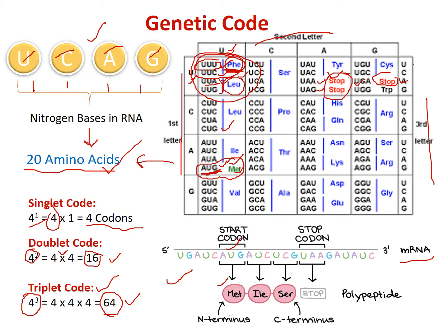For better understanding, consider this mRNA sequence example: when ribosomes find the AUG start codon, they start protein synthesis and attach methionine. Then AUC codes for isoleucine, and UCG codes for serine. Based on the mRNA sequence, ribosomes incorporate amino acids into the polypeptide chain. When they find UAA — the stop codon — they stop polypeptide synthesis.